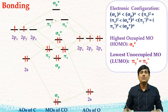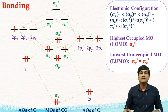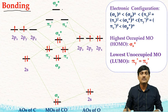Dear friends, welcome to Bond with RK Chemistry YouTube channel. In this video I will explain bonding in metal carbonyl and also some structures of metal carbonyl. In bonding in metal carbonyl, first we have to understand the molecular orbital diagram of carbon monoxide.